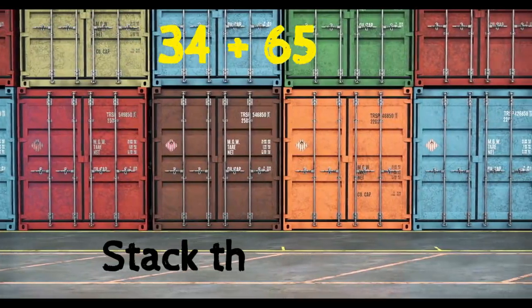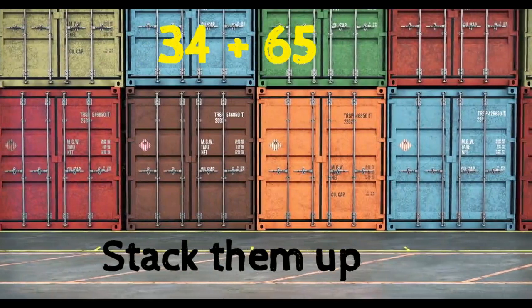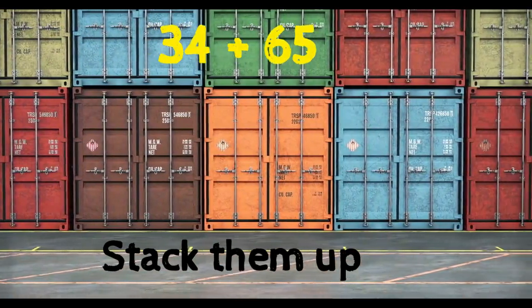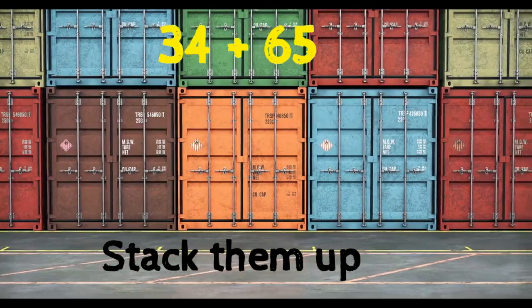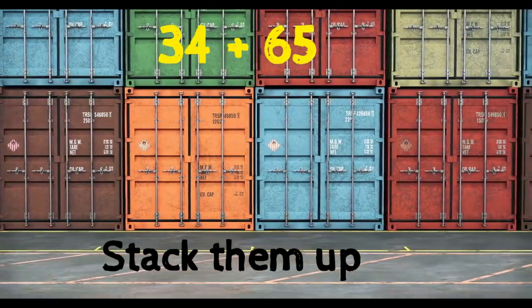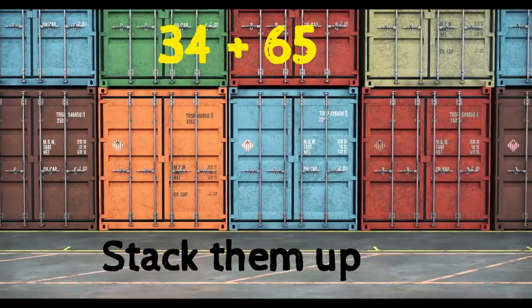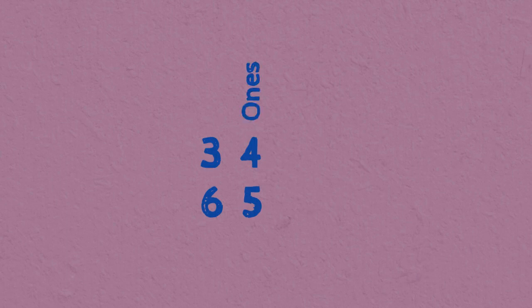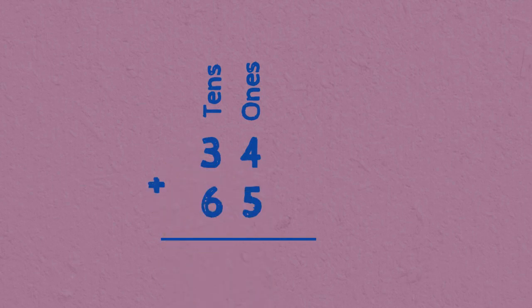So if we have two numbers, 34 plus 65, the first thing that we need to add these two numbers is to stack them up. We stack them up by putting them into columns of their value, where ones places are in one column and tens places are in one column. Then we draw the line right underneath to write the answer and the plus sign to show that we're adding.